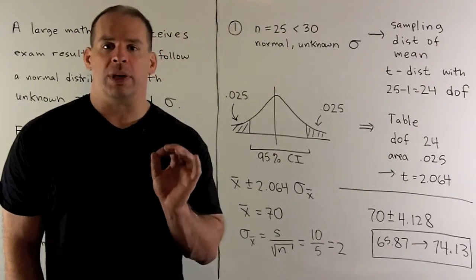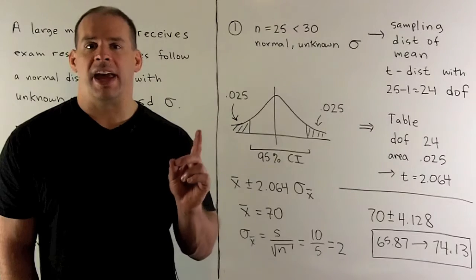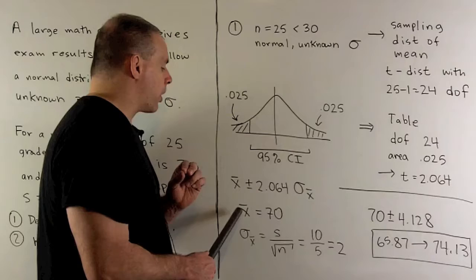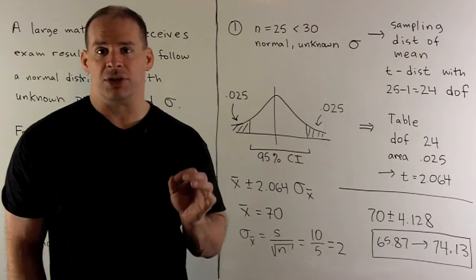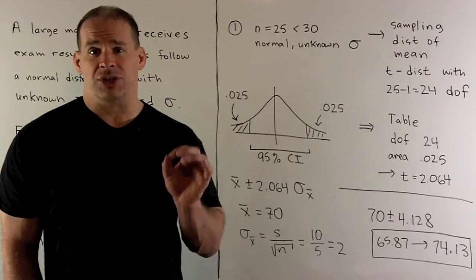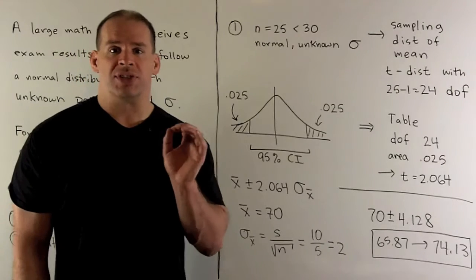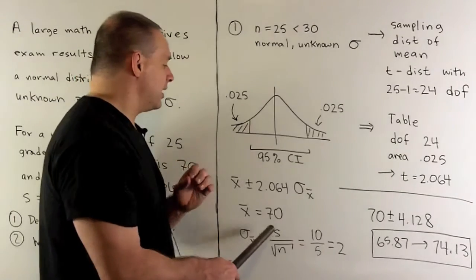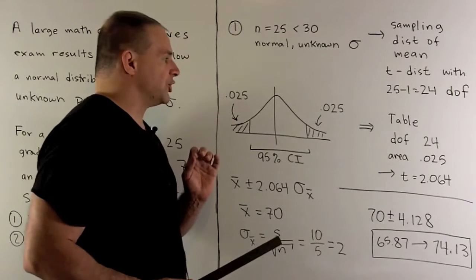To construct a confidence interval, we need three items. First, the center — that's the sample mean, so our center is 70. Then, we need the standard deviation of the sampling distribution of the mean. We take the population standard deviation divided by the square root of the sample size. Since we don't have sigma, we use the sample standard deviation: 10 divided by the square root of 25, which is 10 over 5, giving us 2.